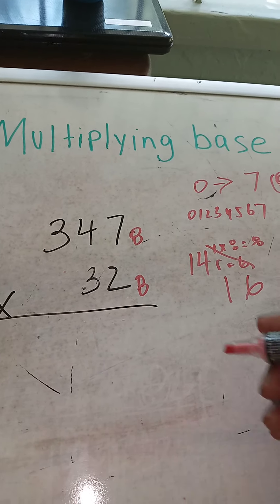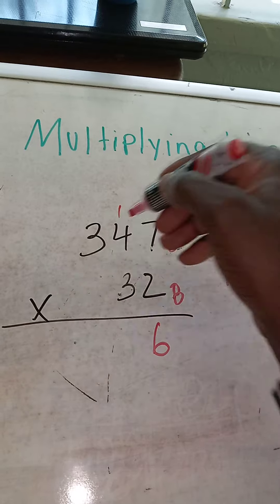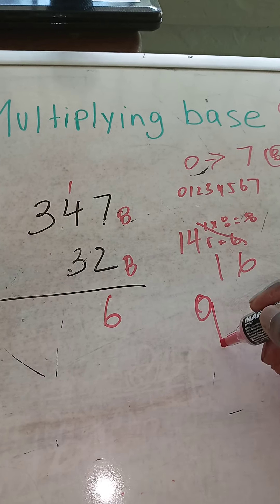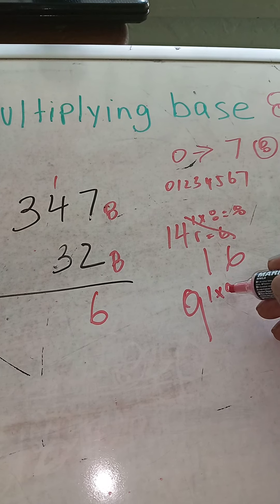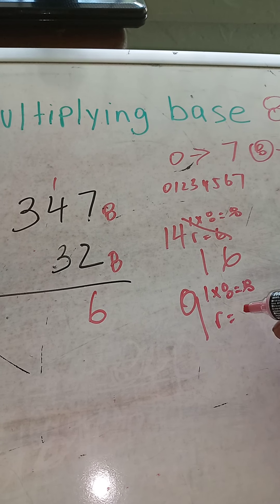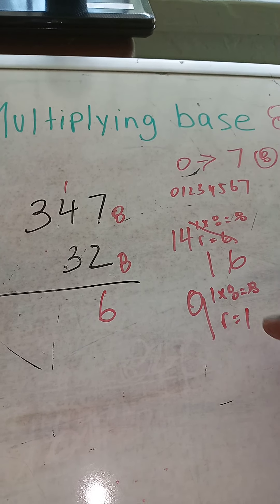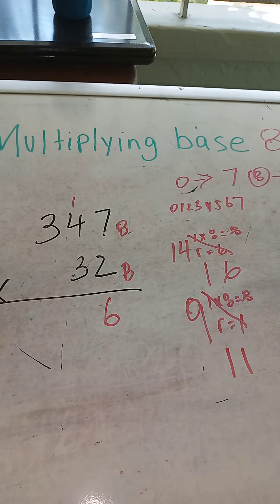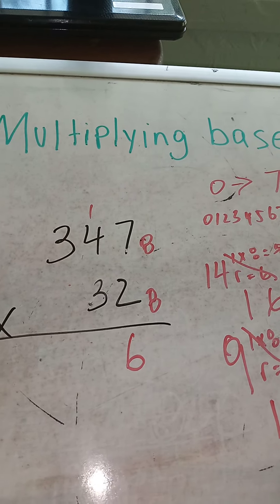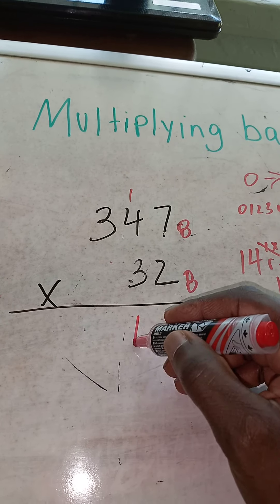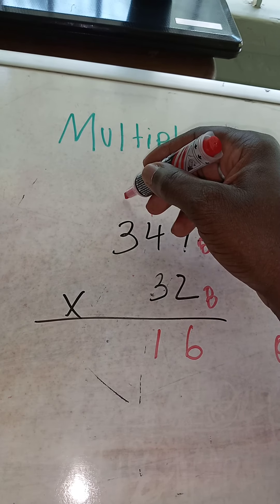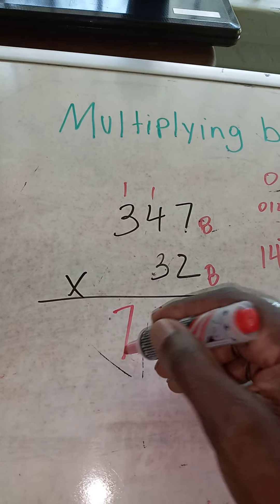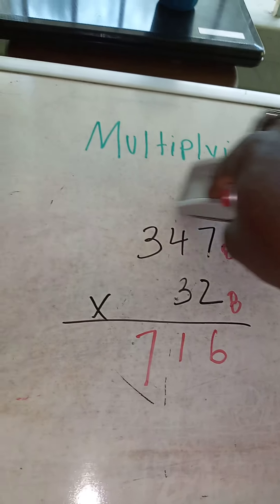So we put down the 6. 2 times 4 is 8, and 1 is 9. We can't write 9, so we say 1 times 8 equals 8, and the remainder equals 1. 8 and 1 equals 9. So 1, 1 would be what we write for 9. 1, 1, 2, 3, 6, and 1 equals 7. We can write 7, that's okay.